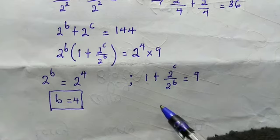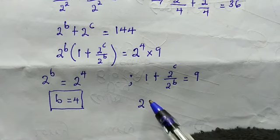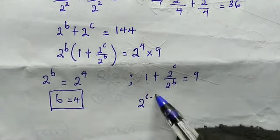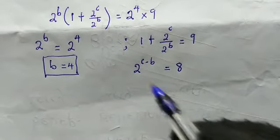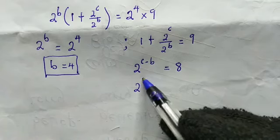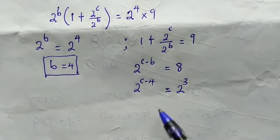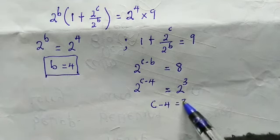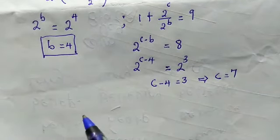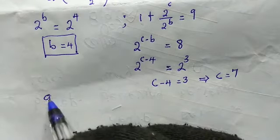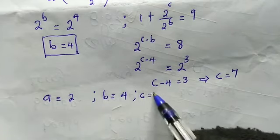Subtracting 1 from both sides and using the law of exponents, we get 2^(C−B) equals 8, which is 2^3. Since the bases are the same, we equate the exponents: C minus 4 equals 3, which means C equals 7. So our final solutions are: A equals 2, B equals 4, and C equals 7.